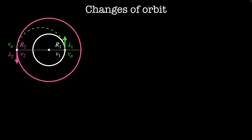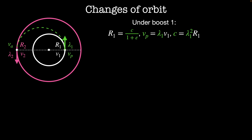We'll solve this in three steps. The first step is applying boost 1. The radius of the circular orbit R1 equals the minimum radius of the elliptical orbit, so R1 equals c divided by 1 plus the eccentricity. The velocity at perigee Vp equals lambda1 times V1, and the coefficient c equals lambda1 squared times R1. Substituting c into the orbit equation, R1 equals lambda1 squared times R1 divided by 1 plus epsilon. The R1s cancel, giving us the eccentricity epsilon equals lambda1 squared minus 1.